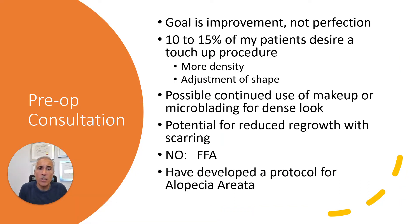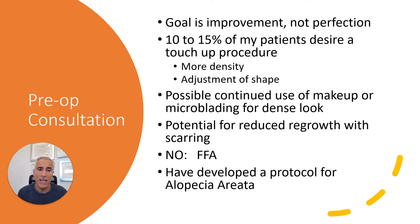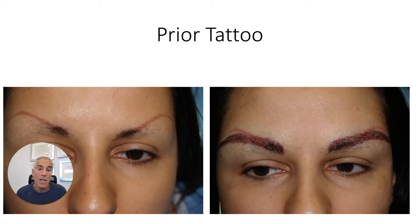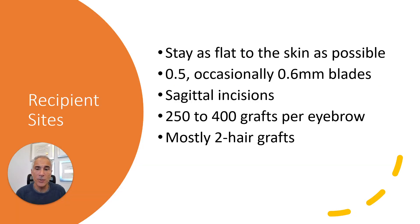I explain in pre-op that the goal is improvement, not perfection. Around 10 to 15% of my patients desire a touch-up procedure, either for more density or adjustment of shape, but the great majority do not require nor desire it. They may continue to use some makeup or microblading for a denser look, particularly if they have very light-colored skin. There is the potential for reduced regrowth if they've had prior transplants, and I will not transplant FFA. However, for alopecia areata, I have developed a protocol. Patients with a prior tattoo — usually I try to follow those tattoos, but in some cases it would be ill-advised to follow a high arch, so I create what I think is a nice look as close to the position of the prior tattoo as possible.